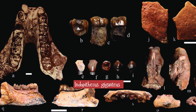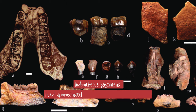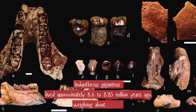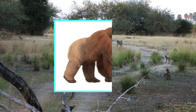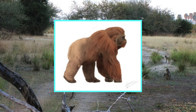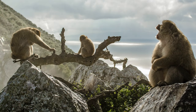Indopithecus giganteus lived approximately 8.6 to 8.85 million years ago in Northern India and Pakistan. This giant ape, weighing about 150 kg, had large molars and a massive jaw similar to Gigantopithecus. Geographic barriers may have led to its independent evolution, and Indopithecus provides crucial insights into ape diversity during significant environmental changes.